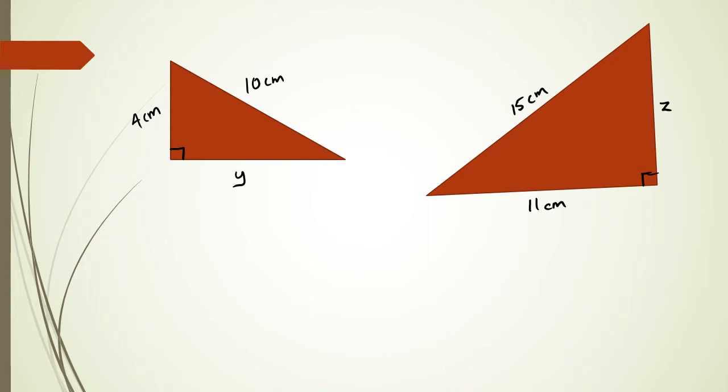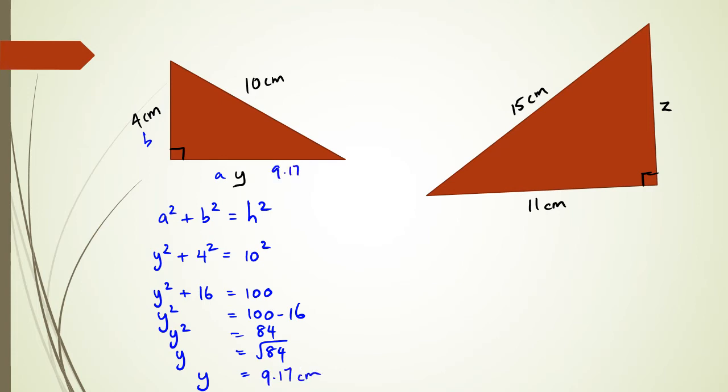So this is the case, nothing changes. You're still going to have a² + b² = h². So in this case, I'm going to put a here and b here. Then I have y² + 4² = 10². And so y² + 16 = 100, y² = 100 - 16, y² = 84, y = √84. And we can say y is equal to √84, which happens to be 9.17 centimeters.